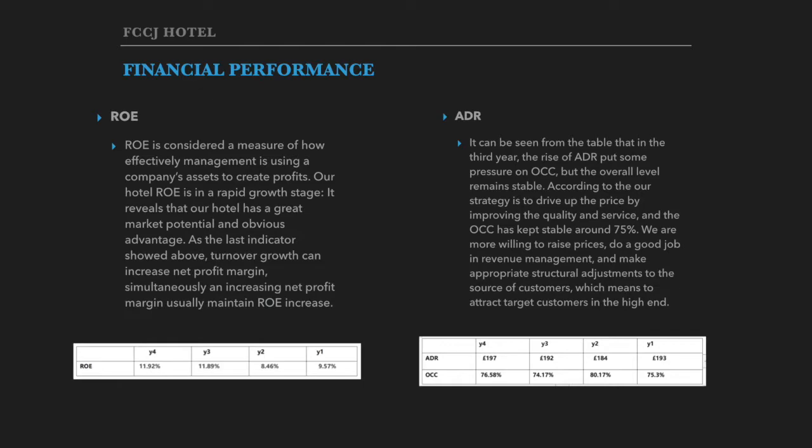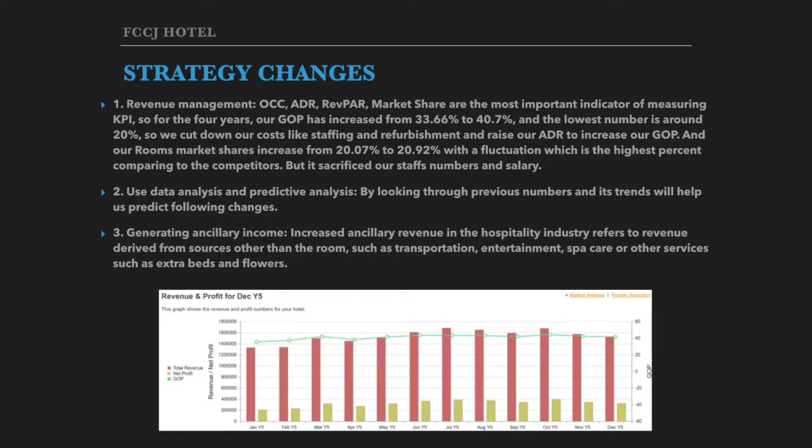And then about the average daily rate. It can be seen from the table that in the third year, the rise of ADR put some pressure on occupancy. According to our strategy to drive up the price by improving quality and service, we think we should make some changes to the strategy.